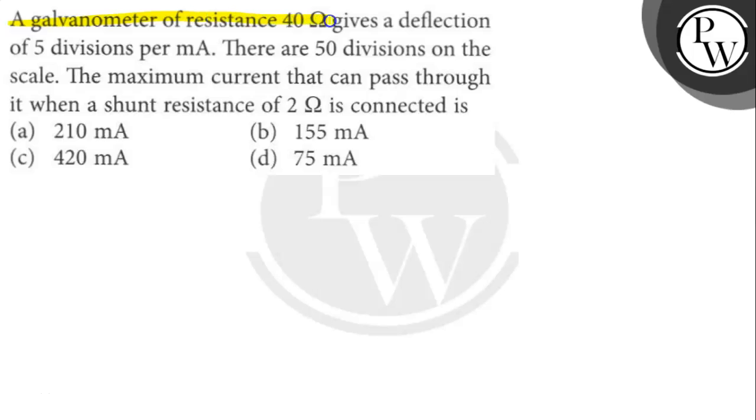A galvanometer of resistance 40 Ohm gives a deflection of 5 divisions per mA. There are 50 divisions on the scale.